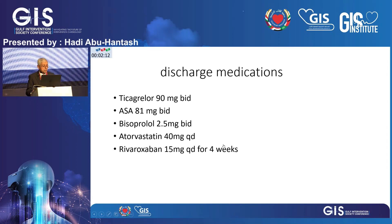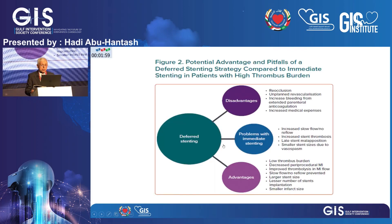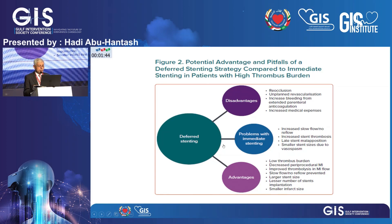He was discharged on ticagrelor, aspirin, bisoprolol, atorvastatin, and again I placed him on rivaroxaban — the use of a NOAC in this subset of patients is up for debate. Regarding deferred stenting: we don't do it routinely because it's not intended to be routine. The major disadvantage is that the vessel might re-occlude, requiring urgent revascularization. The major advantage is avoiding no-reflow and slow-flow. On top of that, you get less stenting of the lesion and you can size the stent to a better reference diameter, as a large thrombus burden exaggerates the apparent vessel size.